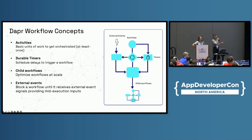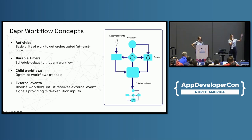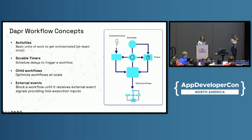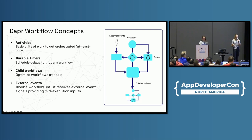I want to talk a little bit about some of the core concepts within DAPR workflows — these are pretty familiar primitives. The biggest thing to consider is you're going to have a workflow object, but really the workflow itself doesn't perform any complex computation or external API calls. All of that's going to be delegated to the smallest unit of work within the workflow, which is called an activity.